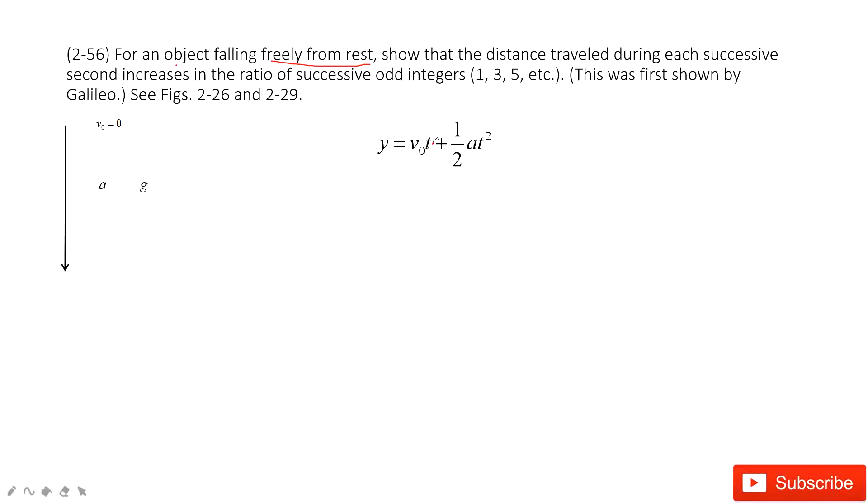So it's super easy for us to find the displacement. The displacement function with time t will be written this way. When we input the initial velocity zero, it becomes one half g t squared. Let's say this is the displacement function y with t, where g and 2 are constants.